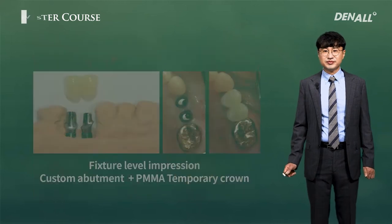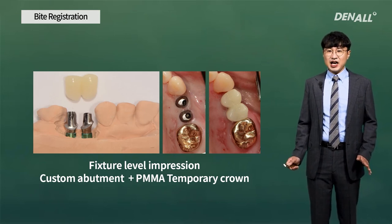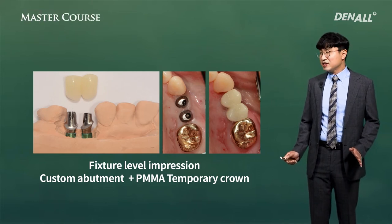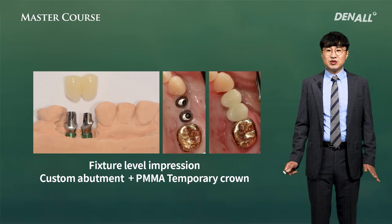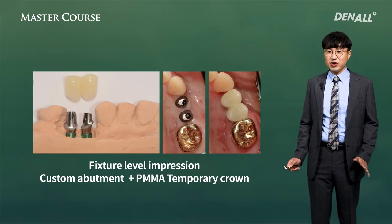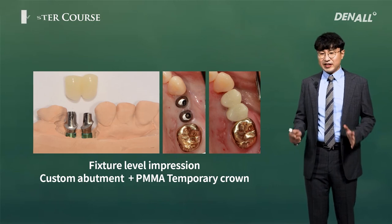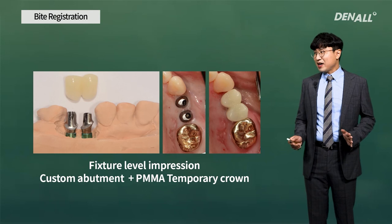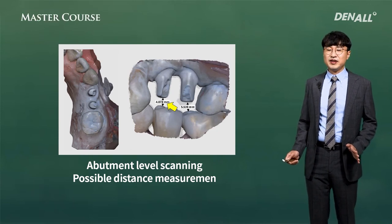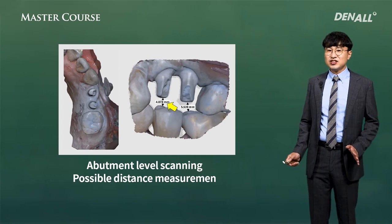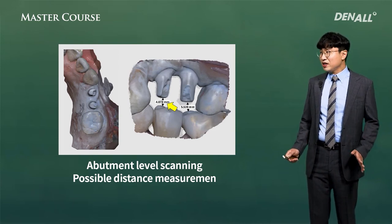Because a stock abutment could not be used, a fixture level impression was taken to make a custom abutment and a PMMA temporary crown. The temporary crown occlusion was slightly low and the centric contact force was a bit insufficient, so intraorally it was adjusted using resin. If the contact had been sufficient as made in the lab, then with that design the final prosthesis would have been milled and delivered directly. But given the insufficient force and slightly low occlusion, a month later the distance was measured again and scanned at the abutment level again. The major benefit of digital scans is that the distance can be accurately measured and checked visually before sending to the lab, leaving not much room for error.